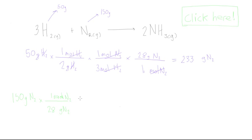So we can cancel out grams of nitrogen gas. Now our units are in moles of nitrogen, and we want moles of ammonia, so we put moles of nitrogen on the bottom.